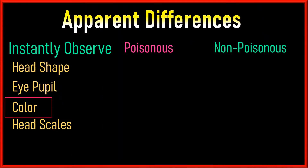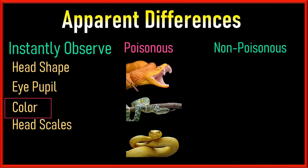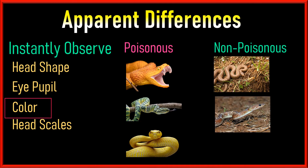If both head shape and pupil observation are not possible, look at the body color of the snake. If the body color is bright and shiny, it's venomous — stay away. If the coloration is normal and nothing special, it might be non-venomous, but safety is still more important.